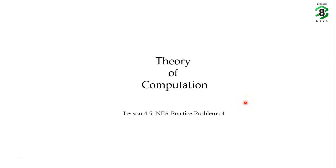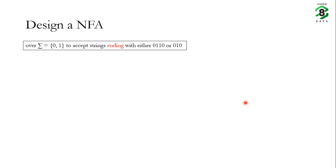Welcome to the theory of computation lectures. So far we have solved different types of problems on NFA. In this class we'll solve a problem on NFA and the same problem on a DFA to see which one is easier. We'll design a NFA over input alphabet {0,1} to accept strings ending with either 0110 or 010 — all sorts of strings which end with either 0110 or 010.